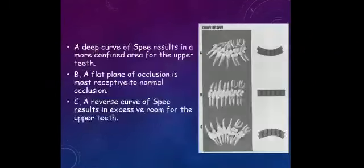In this diagram we can see in figure A, if the curve of Spee is deep, it results in a more confined area for the upper teeth. The upper teeth will get less space to occupy, which will eventually lead to crowding. If the curve of Spee is flat, the upper teeth get proper space, so the occlusion is normal. In case of reverse curve of Spee, they will get excessive space.